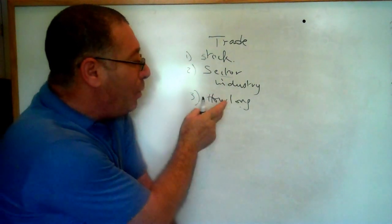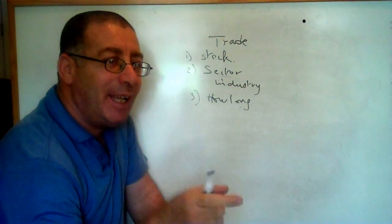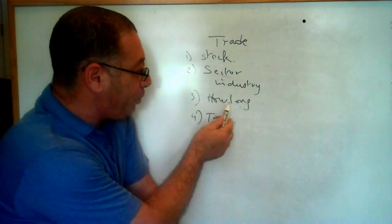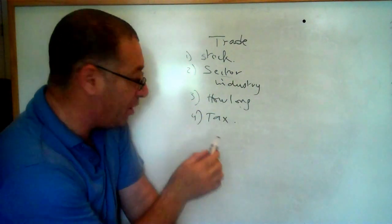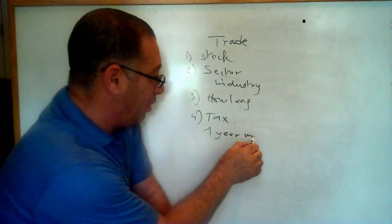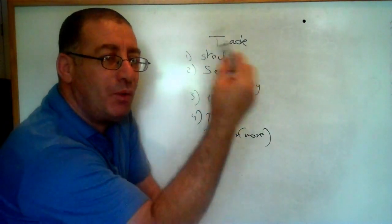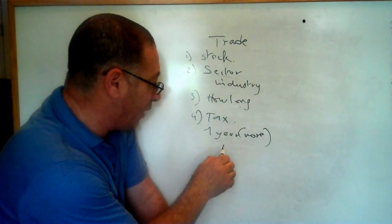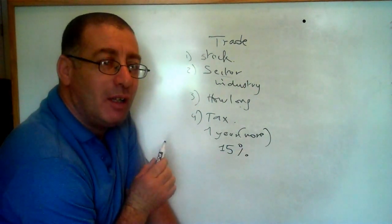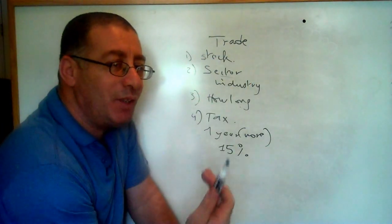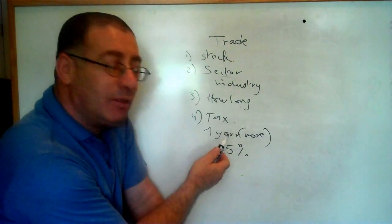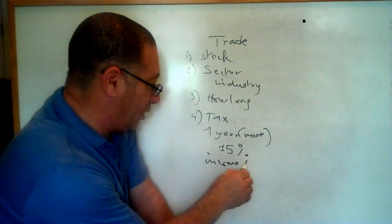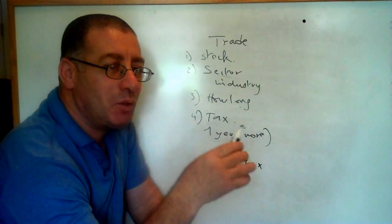When we talk about how long you hold, there's something to add about tax. If you hold the stock for more than one year, the tax will be less - I think it's like 15 percent. But if you hold the stock less than one year and you have a profit, the tax is like income tax - it could be around 25 percent.